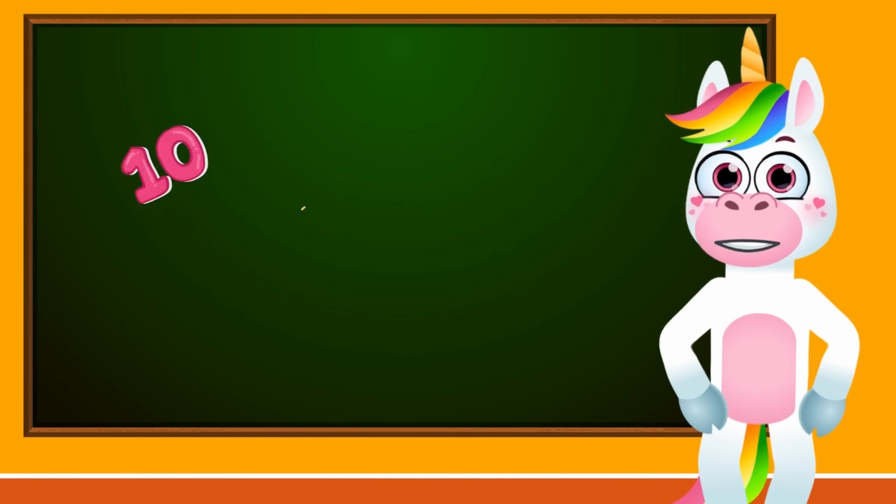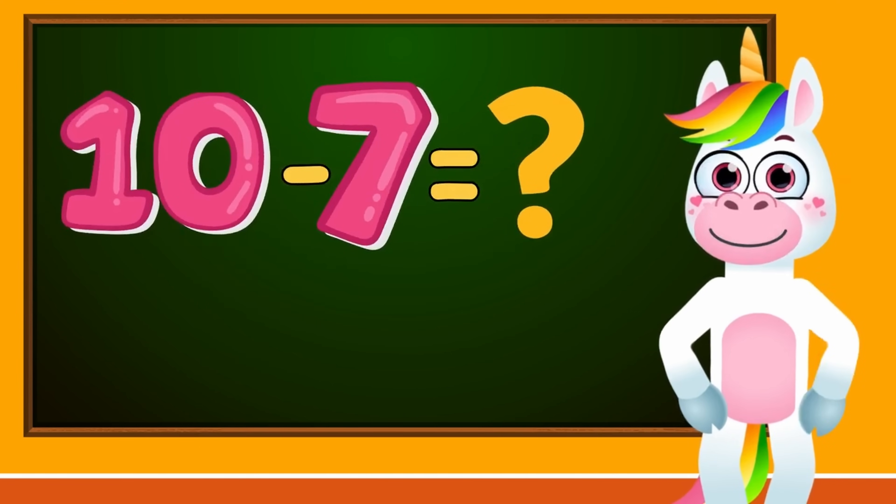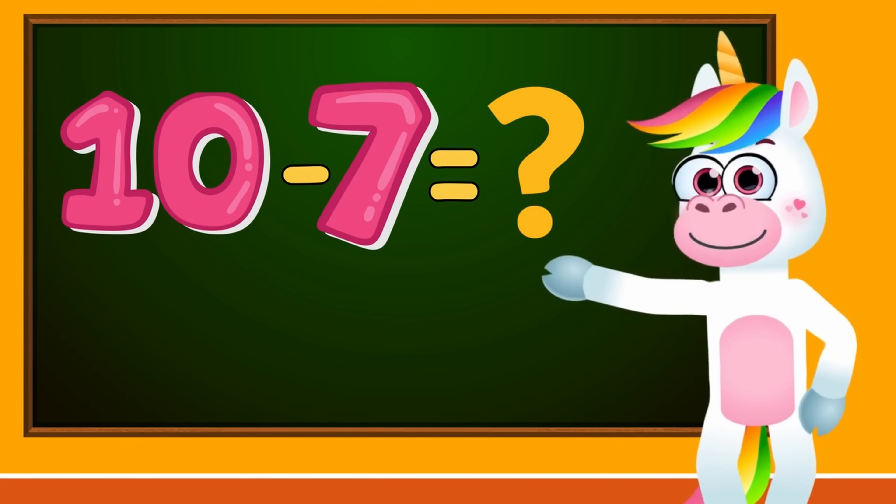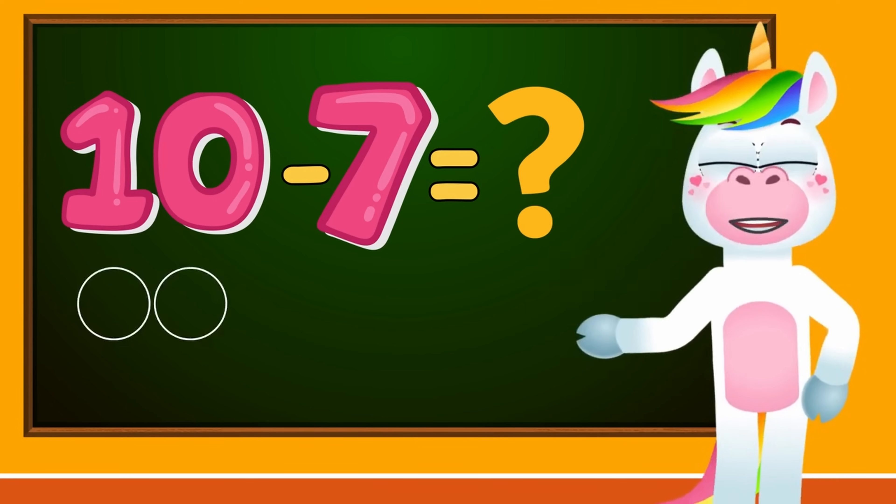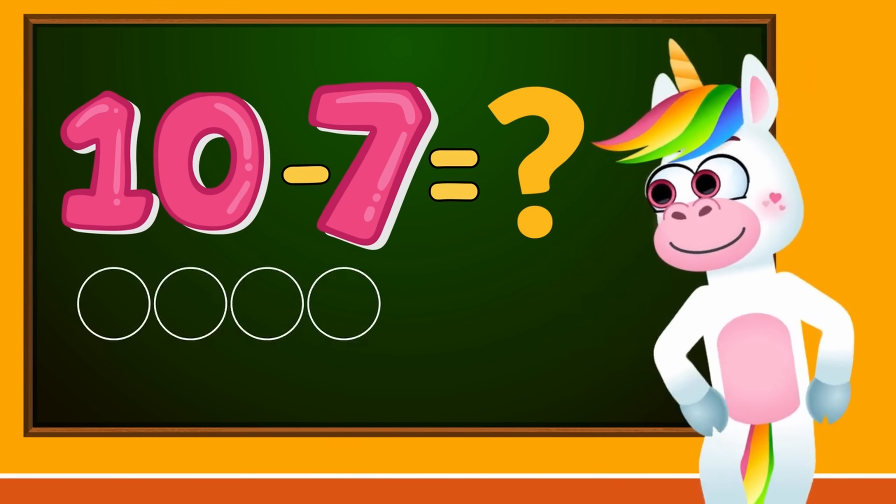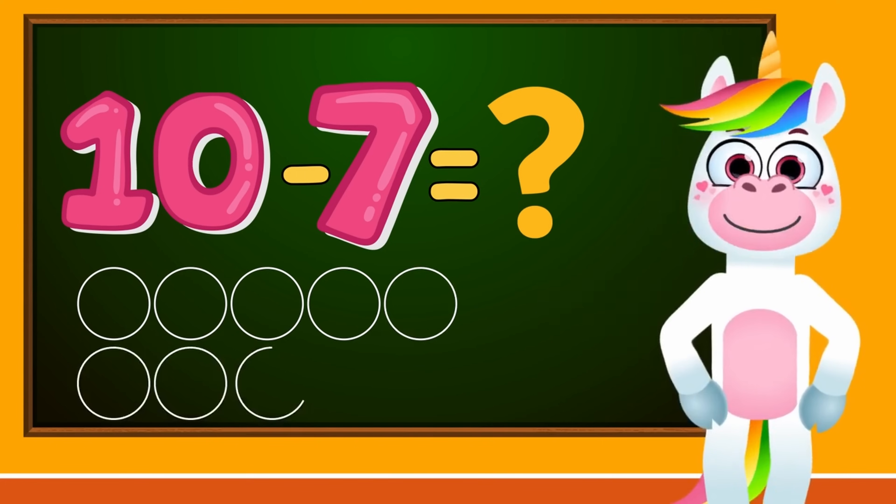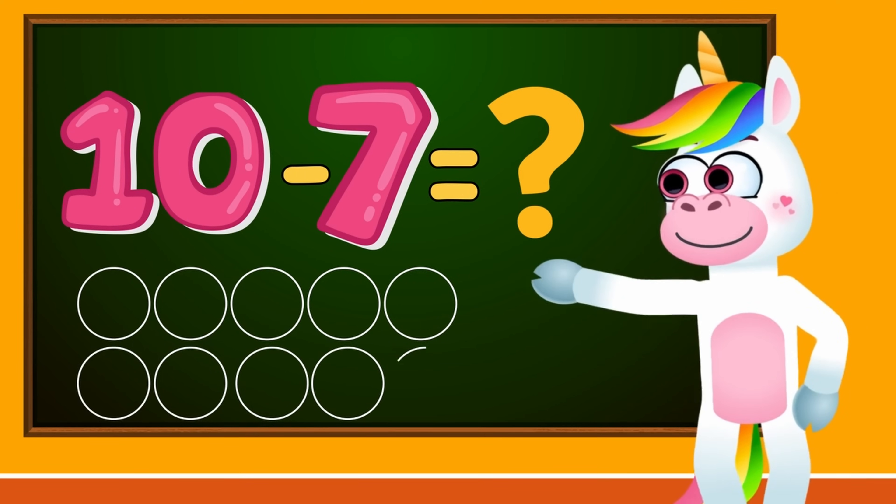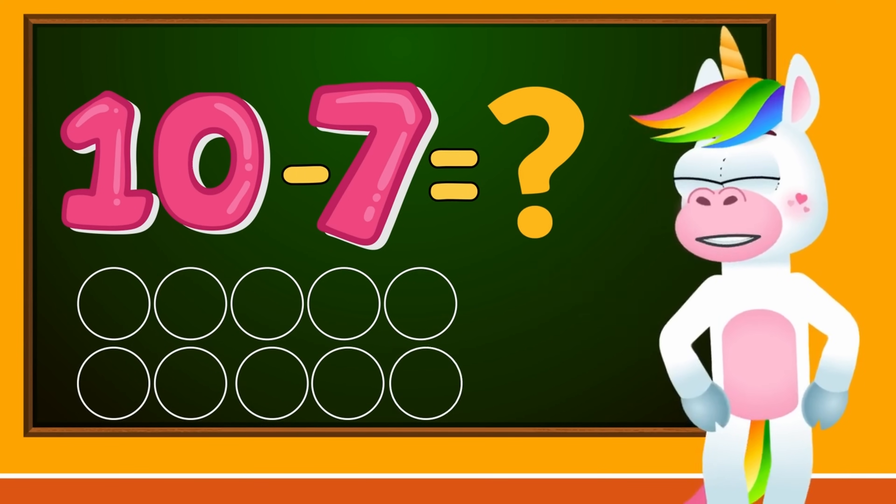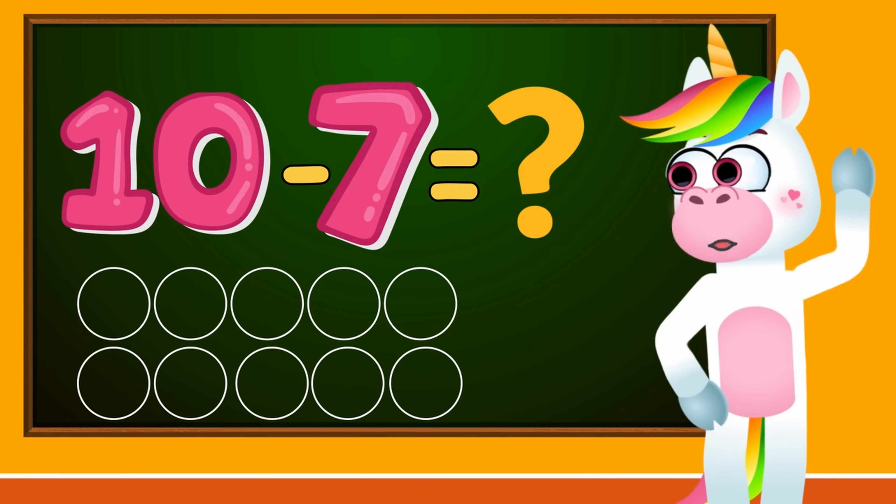Let's see now what 10 minus 7 equals. Kids, let's draw 10 circles on our paper. 1, 2, 3, 4, 5, 6, 7, 8, 9, 10. And since we have to subtract the number 7, we'll cross out 7 circles.